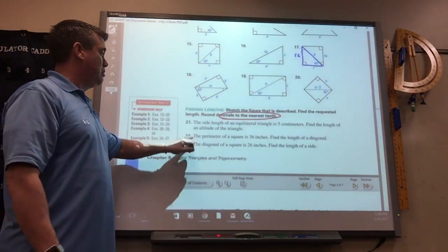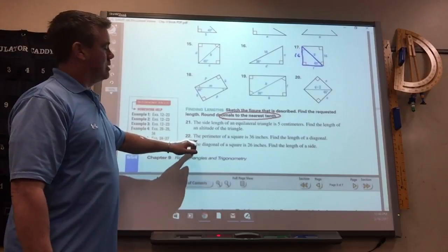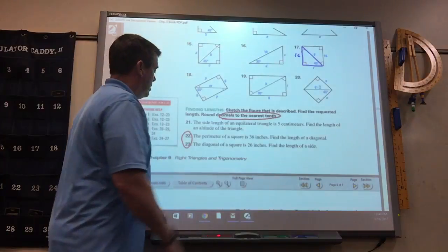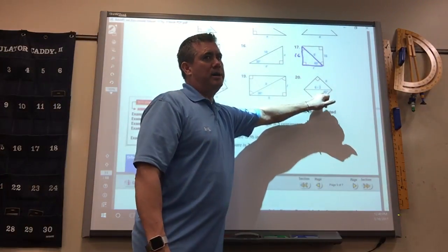So you don't leave these in radical form, 22 and 23. They're both, 23 is like number 20 if you drew it out.